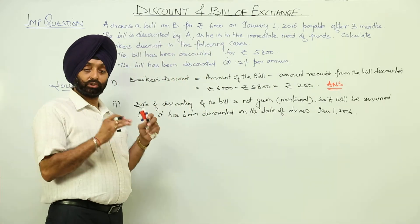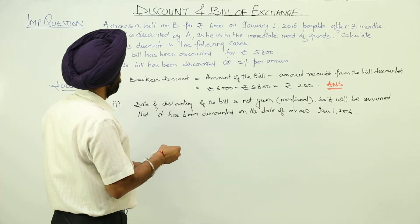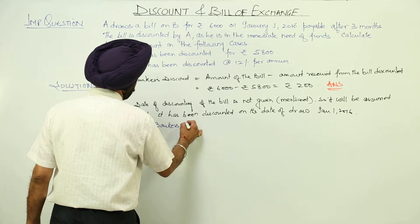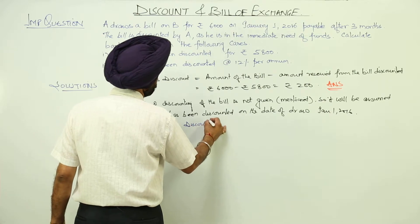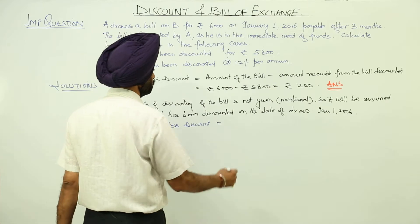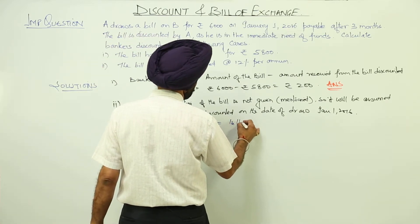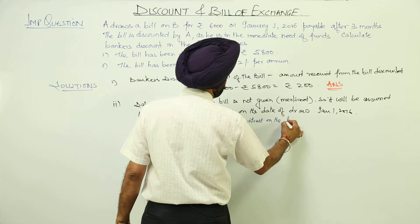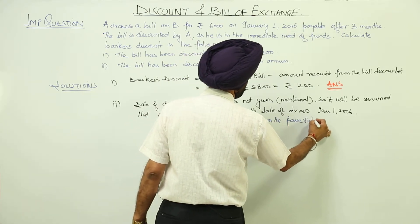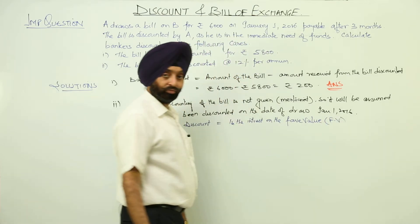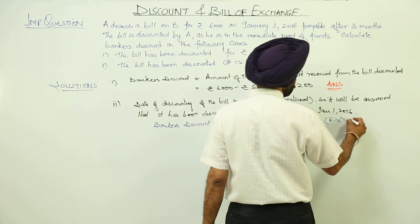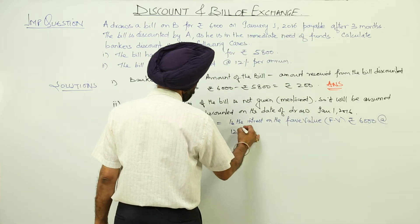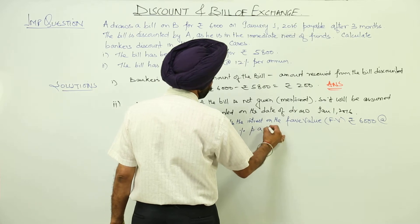This note is just a reminder or a small recap. Now banker's discount is the interest on the face value, abbreviated as FV, which is the interest on the face value of Rs. 6000 at 12% per annum for 3 months.